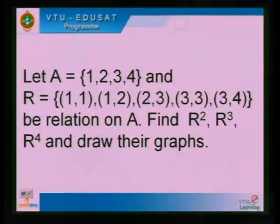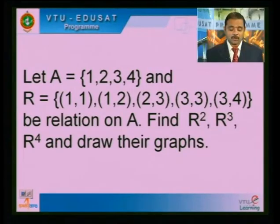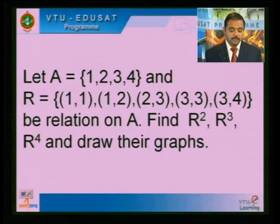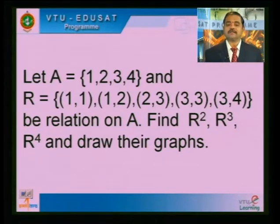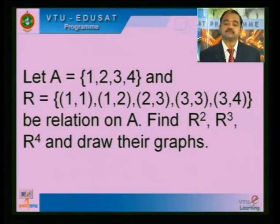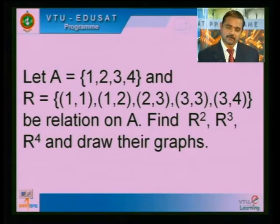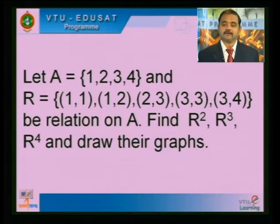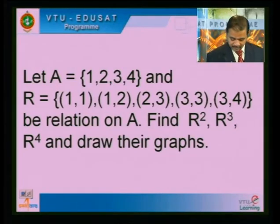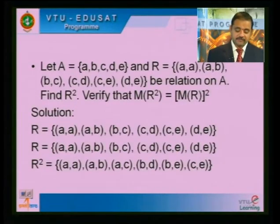Getting back to the last slide of the previous class: A equals {1, 2, 3, 4} and a relation R is given. Find R square, R cube, R power 4, and draw their graphs. How to find R square — R composite R; R cube — R square composite R. That is how you have to do it — write the result then draw the digraphs.